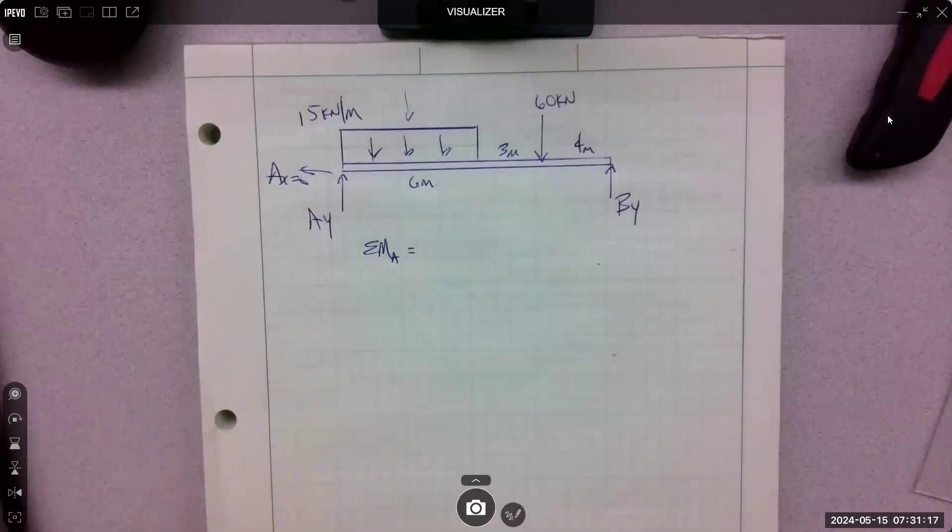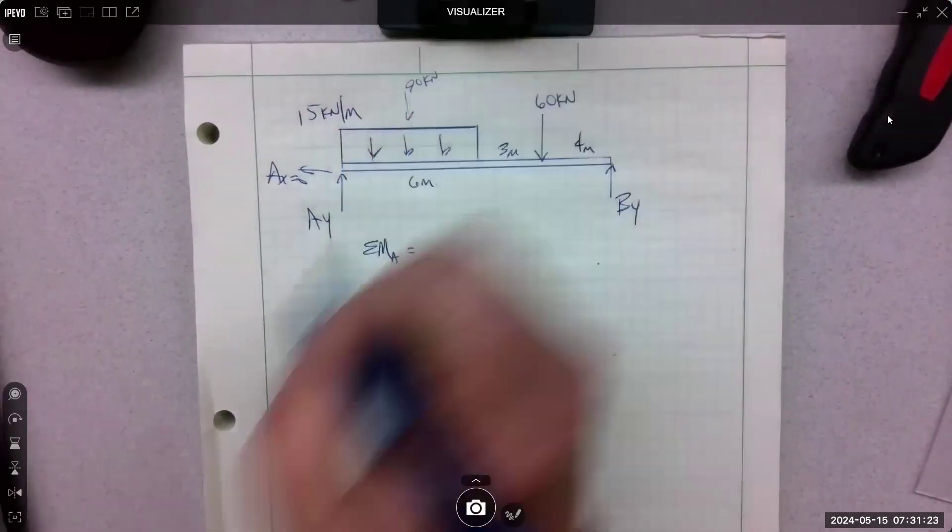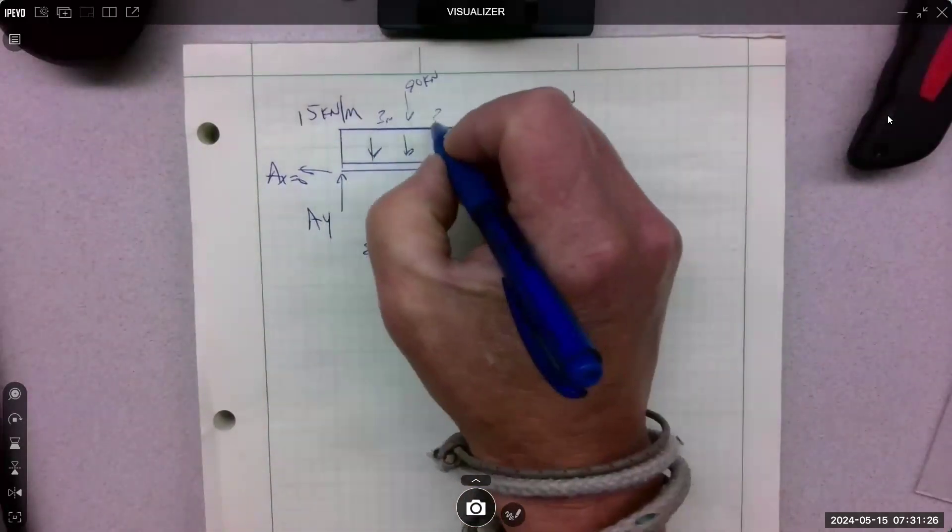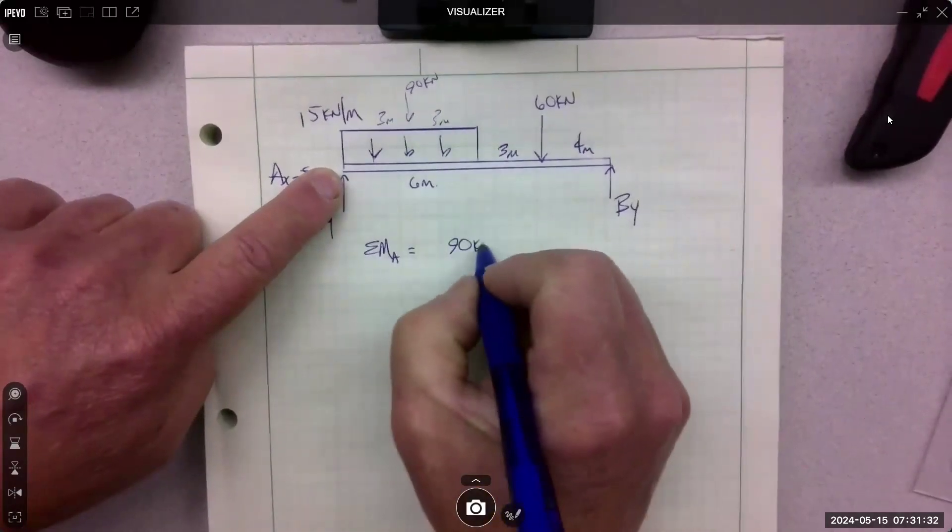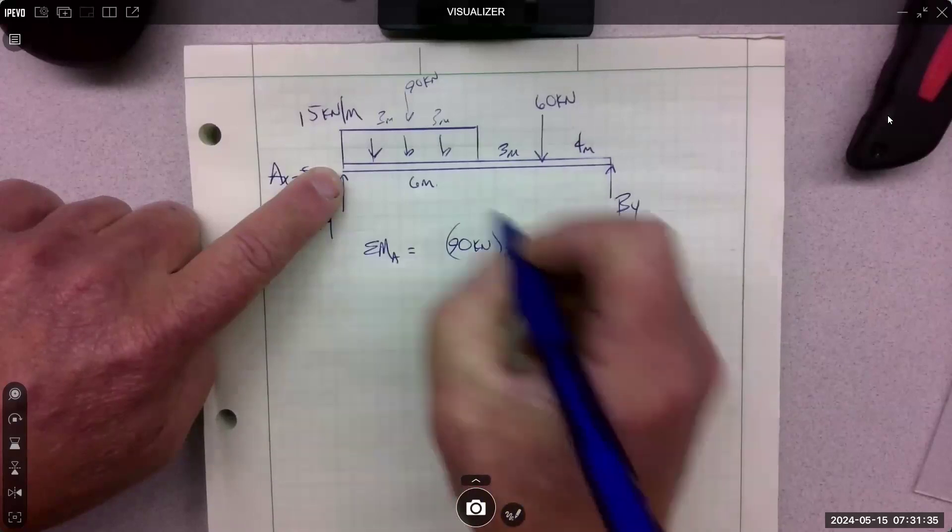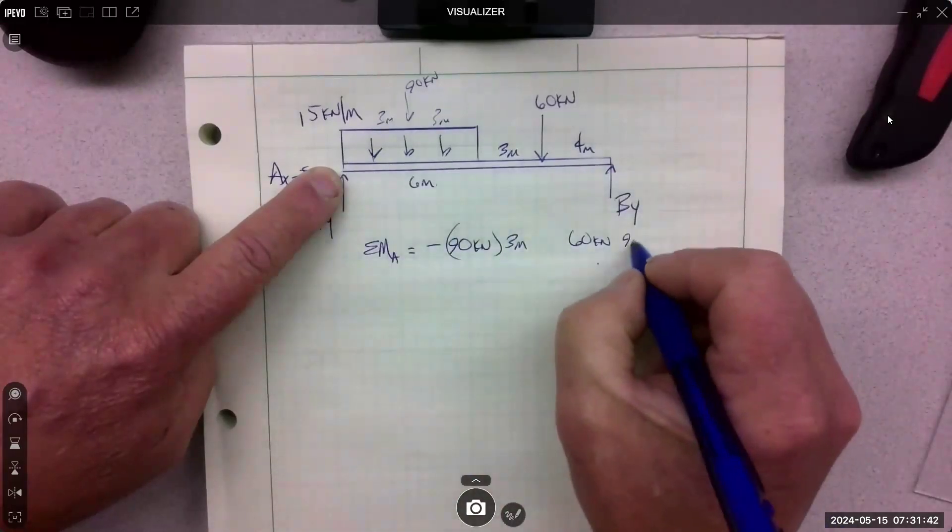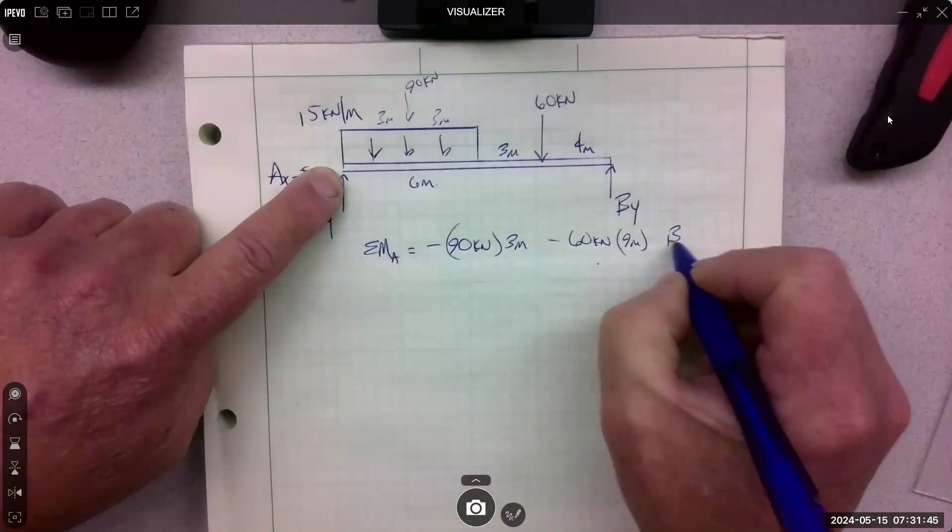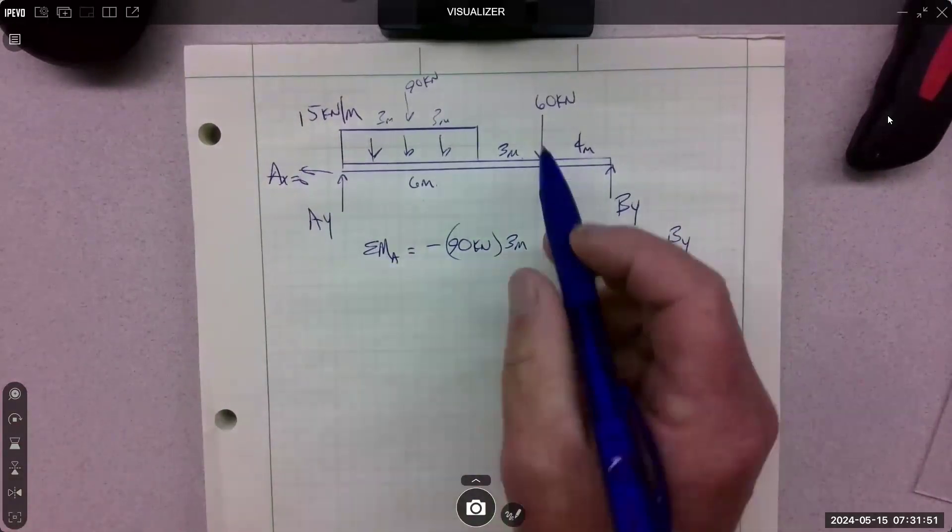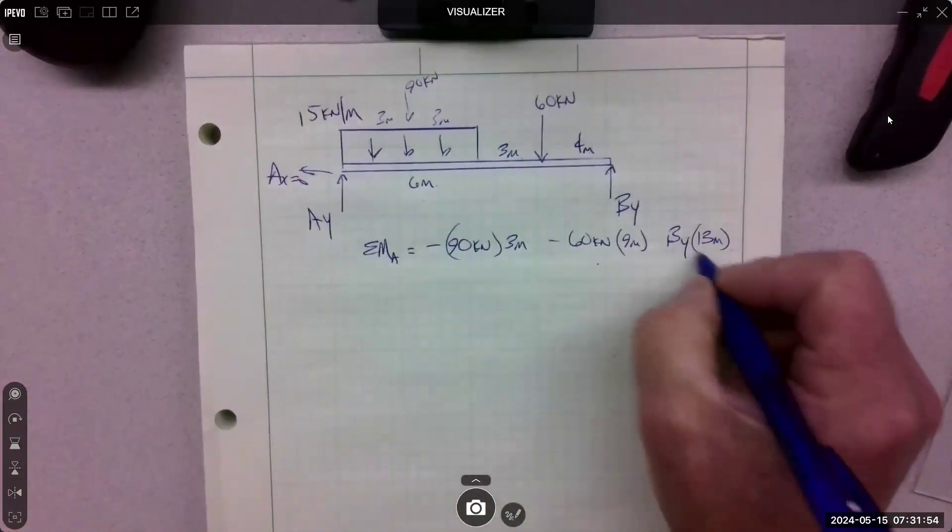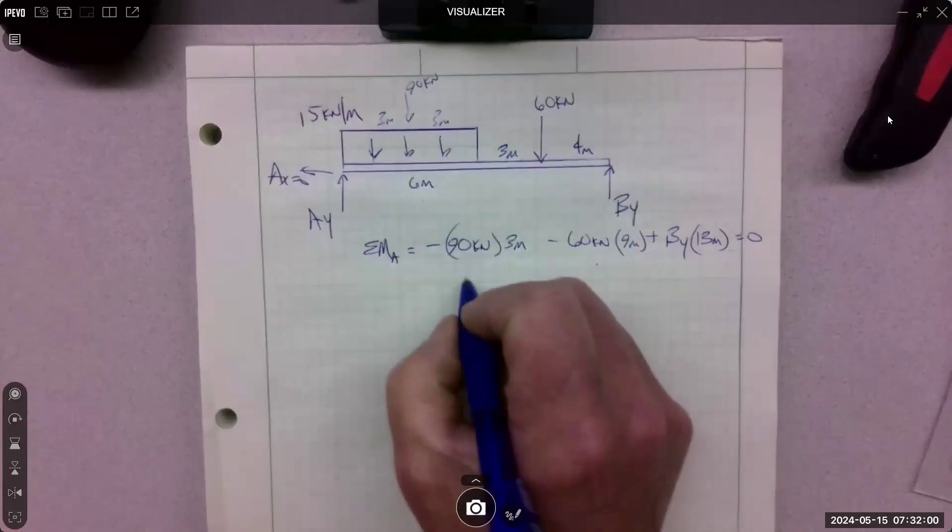So it's 15 times 6. That's 90 kilonewtons concentrated, 3 meters and 3 meters. So my moments about A are going to be 90 kilonewtons times 3 meters. That rotates negative. 60 kilonewtons times 9 meters. That rotates negative. And then B_y times the full length, which is 6 and 7, which is 13. And that's positive. Set it equal to 0 and get us a B_y.